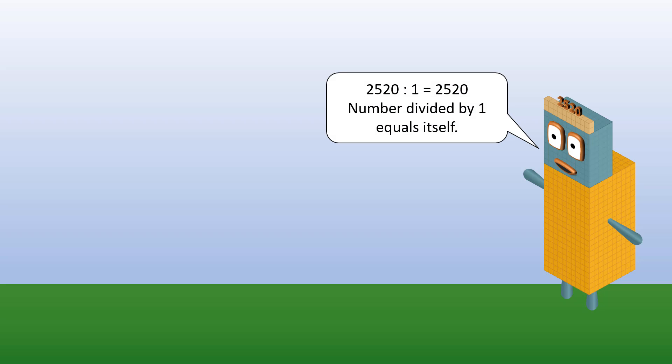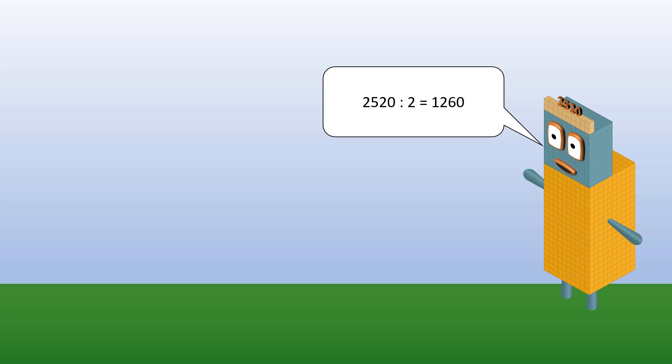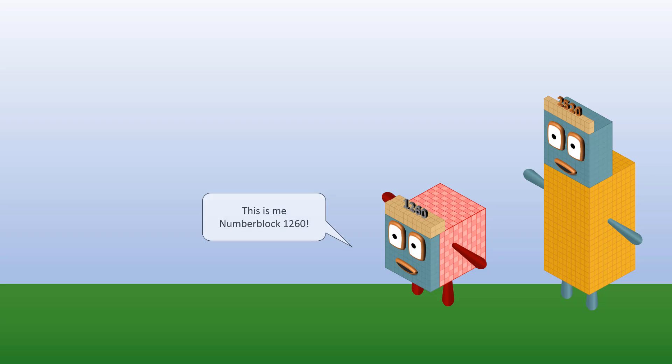Number divided by 1 equals itself. Me divided by 2 equals... This is me, Numberblock 1260.